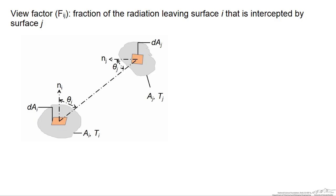A view factor is written as F sub ij, where i and j are integers indicating surfaces that radiation leaves from or is intercepted by. In particular, a view factor is the fraction of radiation that leaves area i and is intercepted by area j.